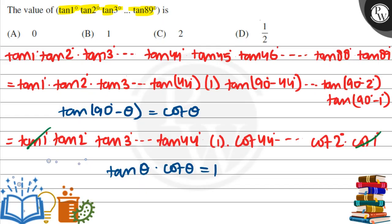If you look here, tan 1, cot 1 is cancelled. Tan 2, cot 2 is cancelled. Tan 3, cot 3. Tan 44, cot 44, and all the terms are cancelled.